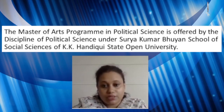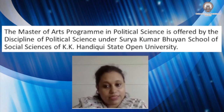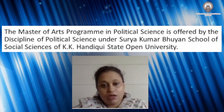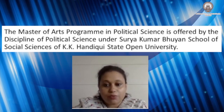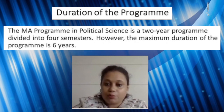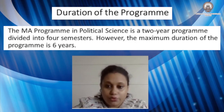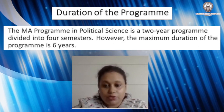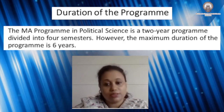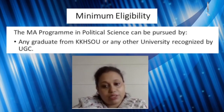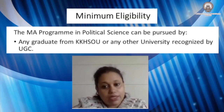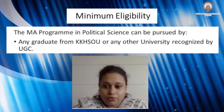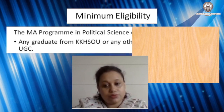The Master of Arts Programme in Political Science is offered by the Discipline of Political Science under Pujjakumar Guya School of Social Sciences of Krishnakantahandik State Open University. The MA Programme in Political Science is a two-year program divided into four semesters, with a maximum duration of six years. It can be pursued by any graduate from Krishnakantahandik State Open University or any other university duly recognized by the UGC.